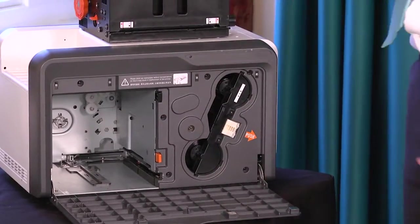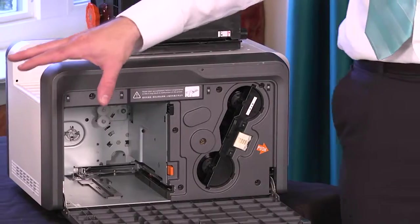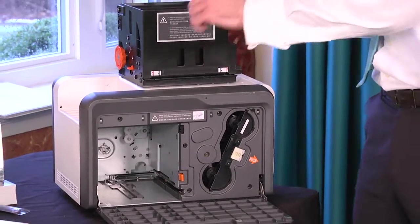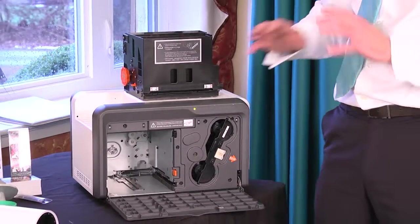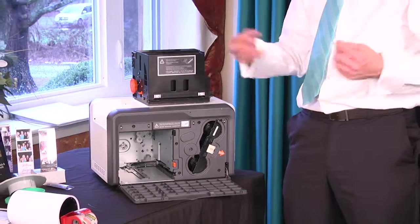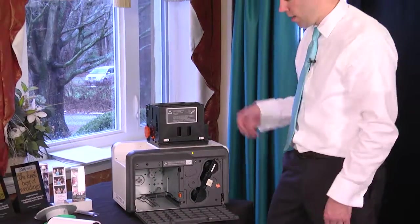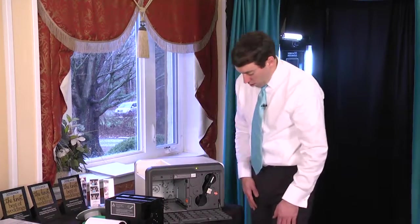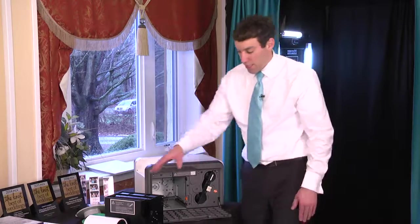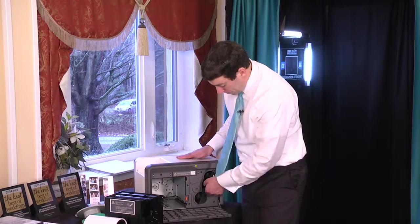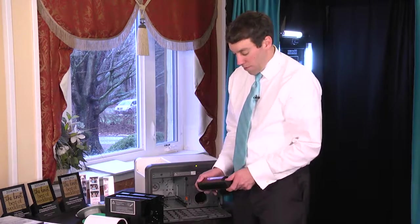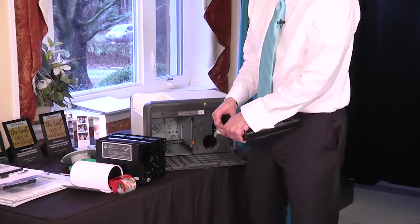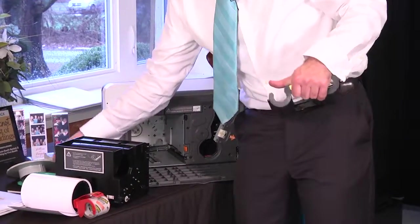As always, you're always going to take the paper out at the end of the night. The ribbon can stay. If you have to change them, you always change them both at the same time, no matter how much is left on one or the other. They usually are close in their capacity. So we're going to go ahead and change this one because it is near end of the roll. We're going to pop a new one in, new paper in, and we're ready to continue the event.